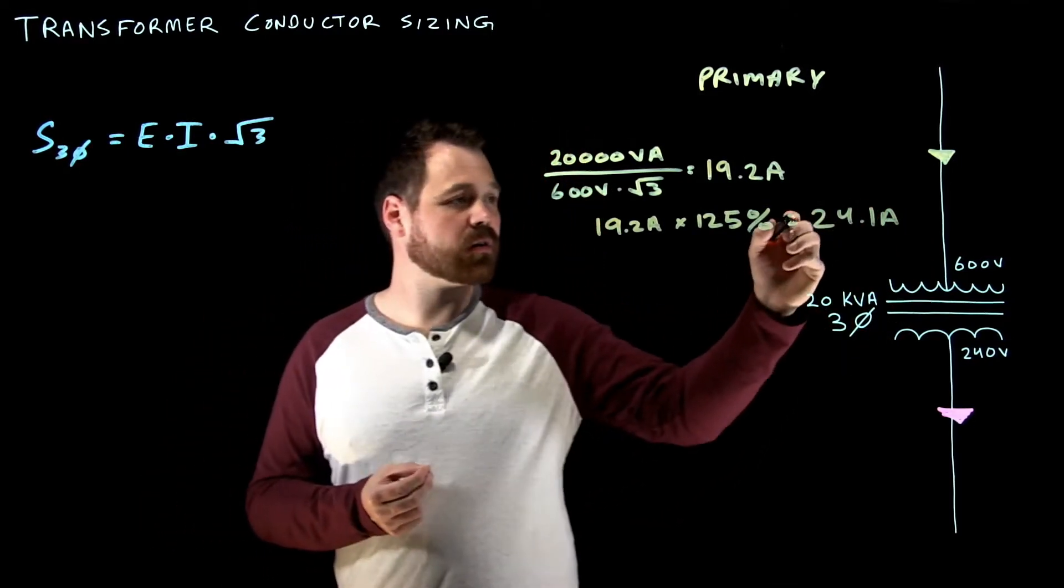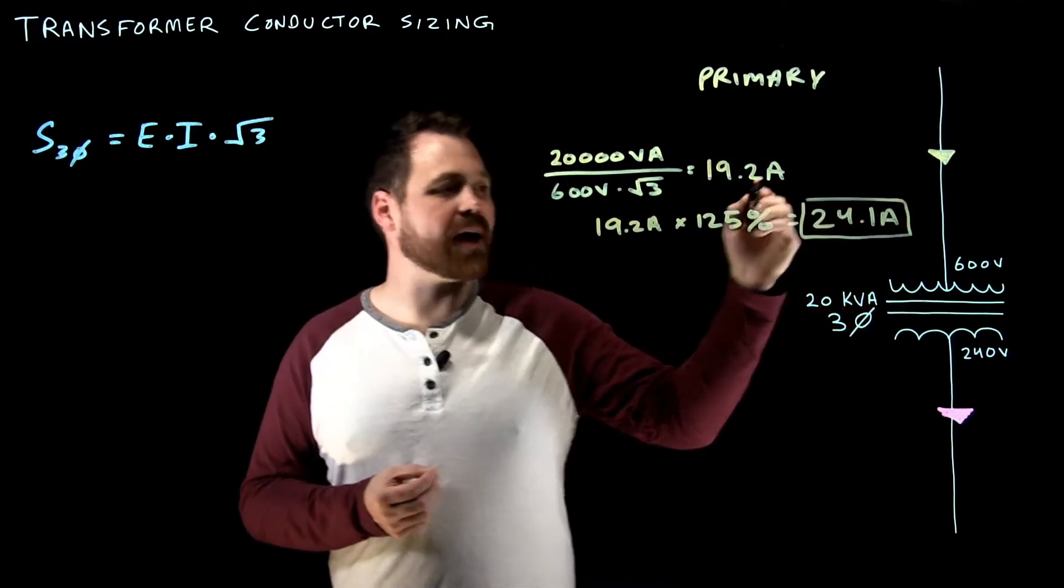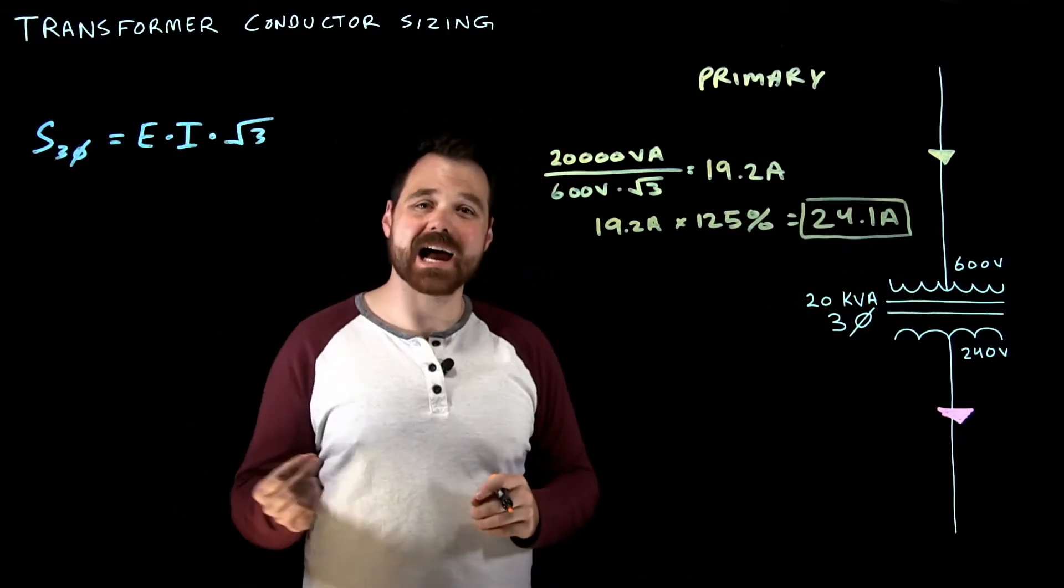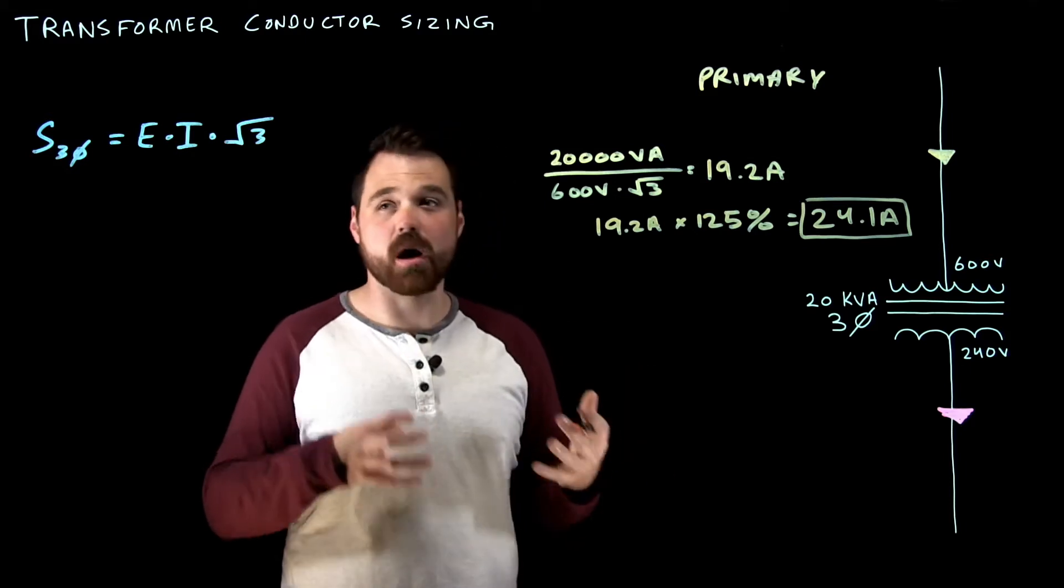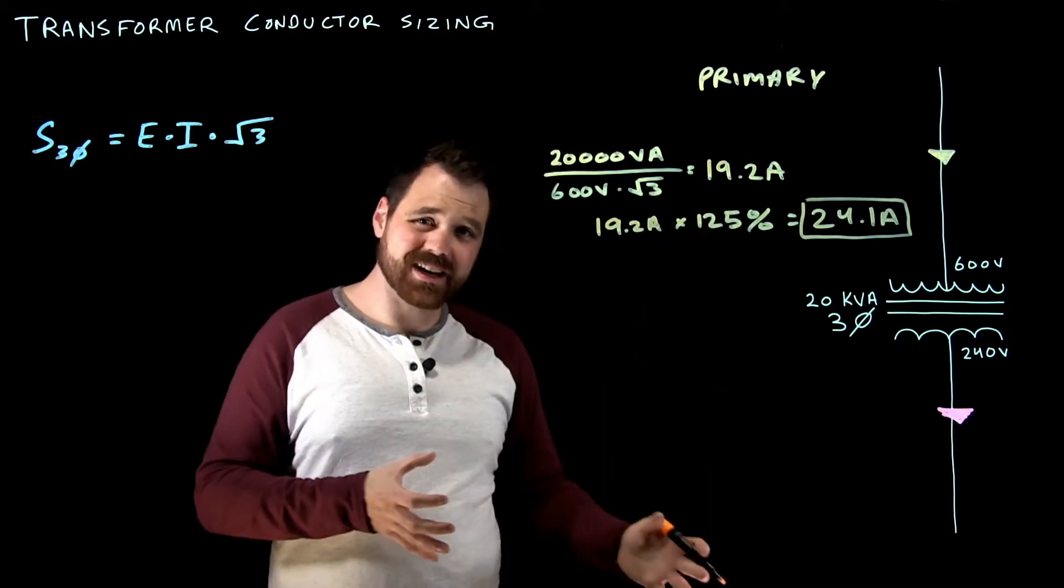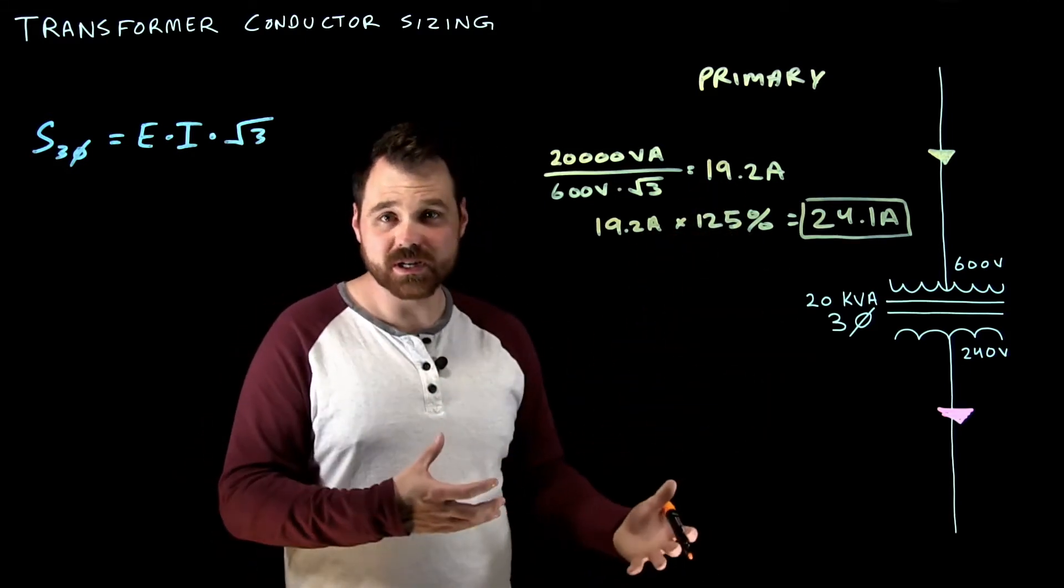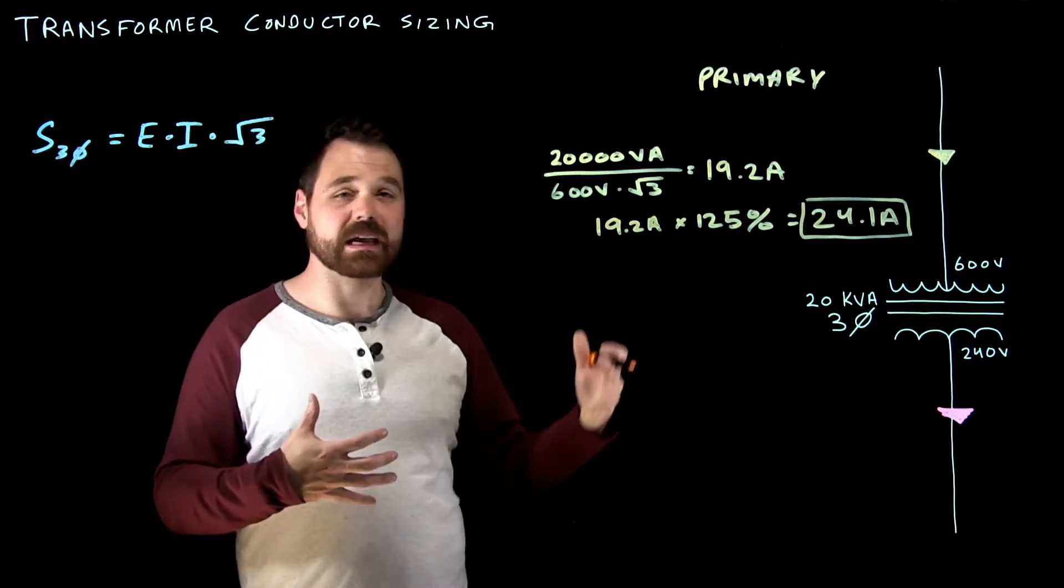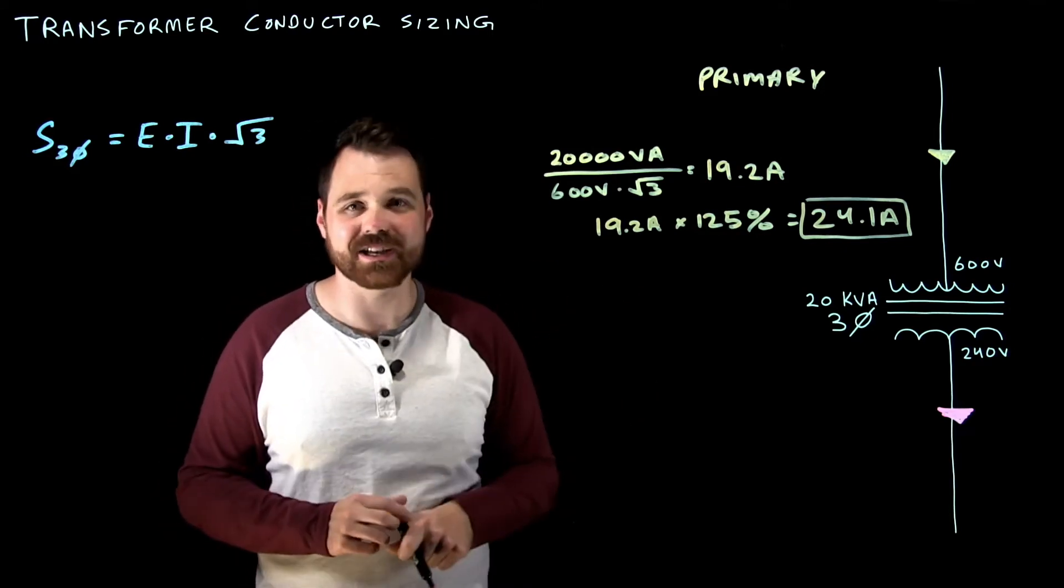This number here, that is the number that I'm going to use to size my conductor. So depending on whether I'm using copper or aluminum, and my termination conduct temperatures, that's how I'm going to determine what table and what column to size that conductor based off.